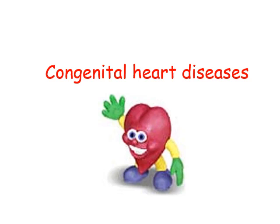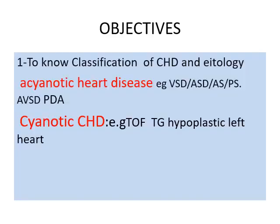Assalamu alaikum. Our lecture is congenital heart disease. Our objective is to know the classification and etiology. We have two types: acyanotic heart disease, with no cyanosis — examples include VSD, atrial septal defect, aortic stenosis, pulmonary stenosis, atrioventricular septal defect, and patent ductus arteriosus. The second group is cyanotic heart disease — examples include tetralogy of Fallot, transposition of great arteries, and hypoplastic left heart syndrome.